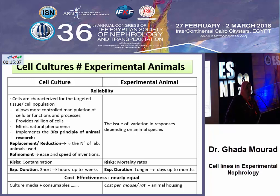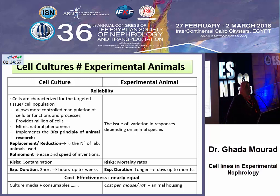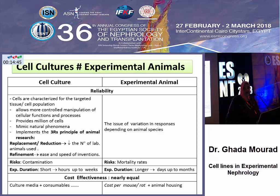Both approaches — whether cell cultures or animal models — have their risks. The most important risk for cell culture is contamination, a risk that would break down all your trials and waste all the efforts and costs that have been implemented during the experiment. On the other hand, speaking about animal models, we are confronted with high mortality rates among the animal models.